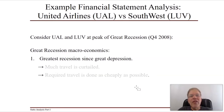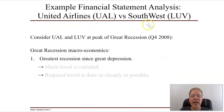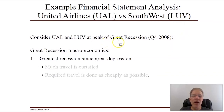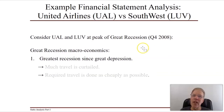A lot of this chapter is going to be worked around an example of two airline companies: United Airlines and Southwest. I want to take us back in time to a very interesting period, the Great Recession, and we'll really be looking at the worst of it in Q4 2008. Things got a little worse in Q1 2009, but Q4 2008 was pretty horrific.